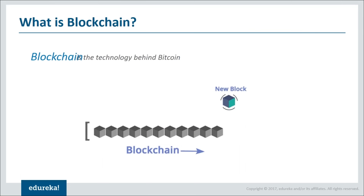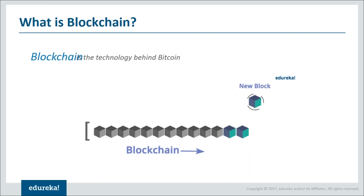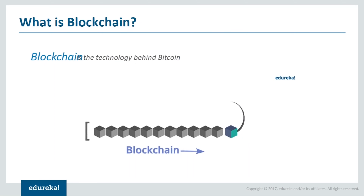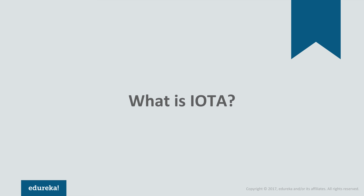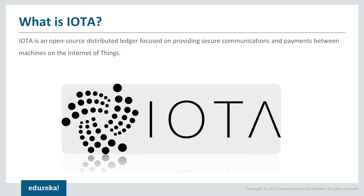Blockchain is basically a collection of these blocks interlinked to each other. Every block has a reference to the previous block, and this forms a chain. Now, what IOTA does is change the overall idea of blockchain — although IOTA is believed to be the third generation of blockchain. IOTA is an open-source distributed ledger system which focuses on providing secure communication and payments between machines on the Internet of Things platform.